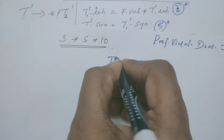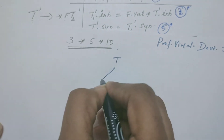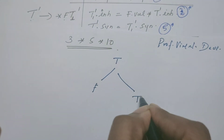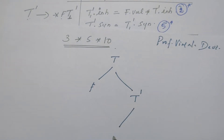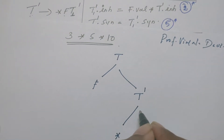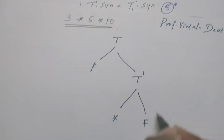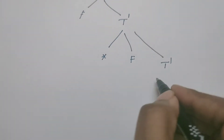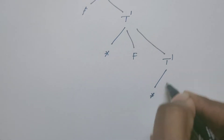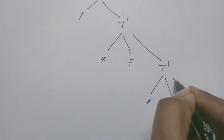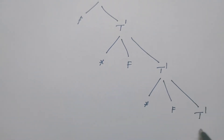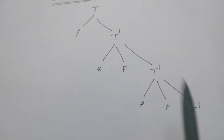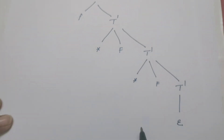T is the root of the parse tree. This T can be expanded as F T'. Further, this T' can be rewritten as T' star F T'. Again, this T' can be rewritten as star F T'. Finally, this T' is replaced by epsilon. So now we have constructed the parse tree.